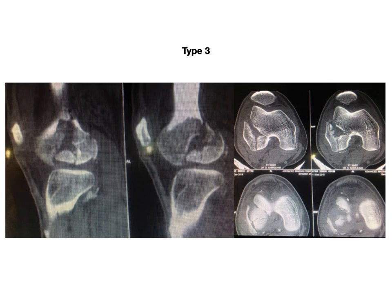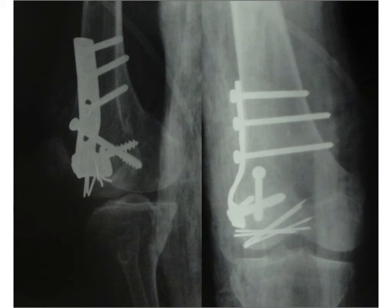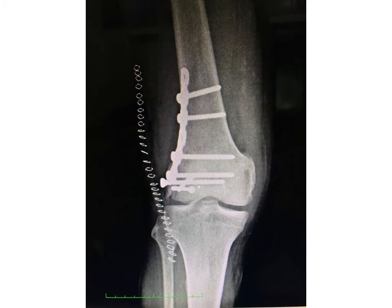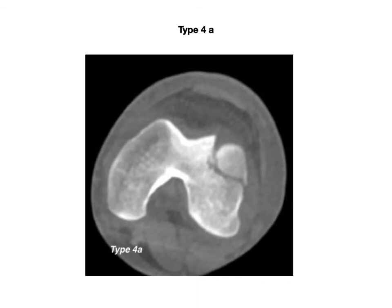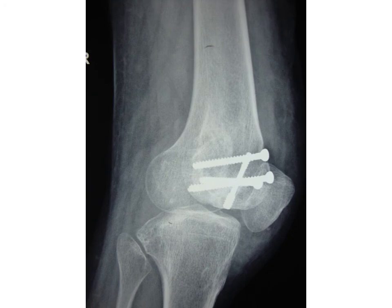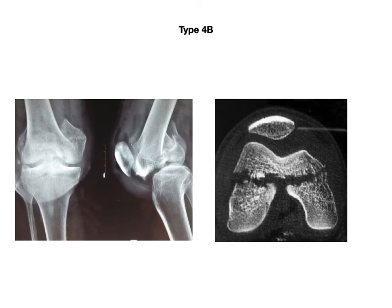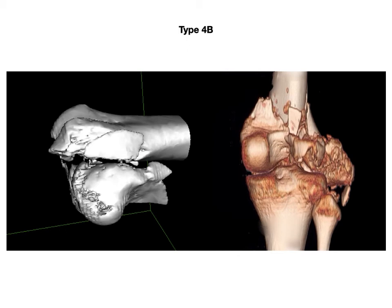Type 3 fractures — the combination type — require additional fixation in the form of a buttress plate. Without following this principle, the result is malunion or non-union, as shown when combination patterns are ignored. Type 4A anterior Hoffa's fractures are not very difficult to treat, but a headless screw should be used to avoid impingement in the patellofemoral joint. Bicondylar Hoffa's fractures may require a very extensile approach, sometimes with tibial tubercle osteotomy, similar to revision knee arthroplasty, to achieve adequate posterior exposure.